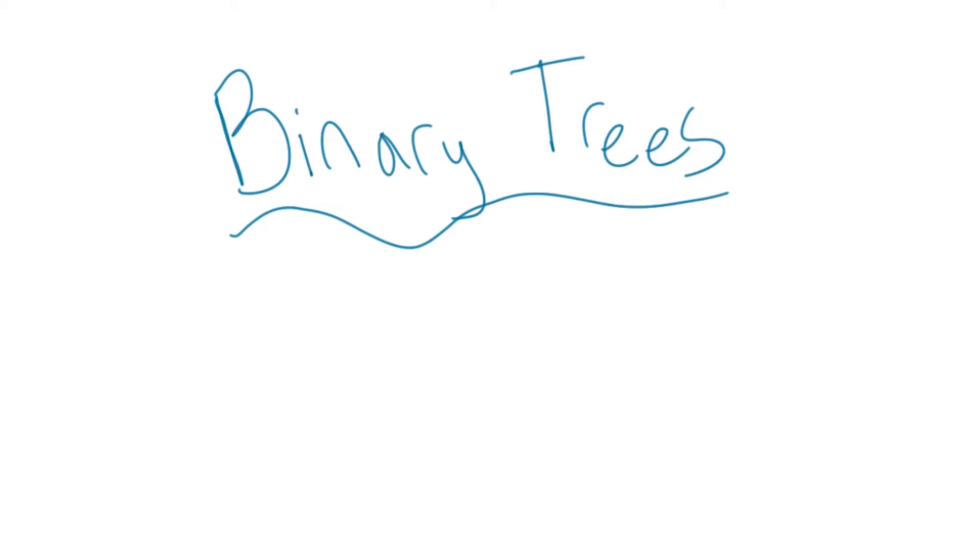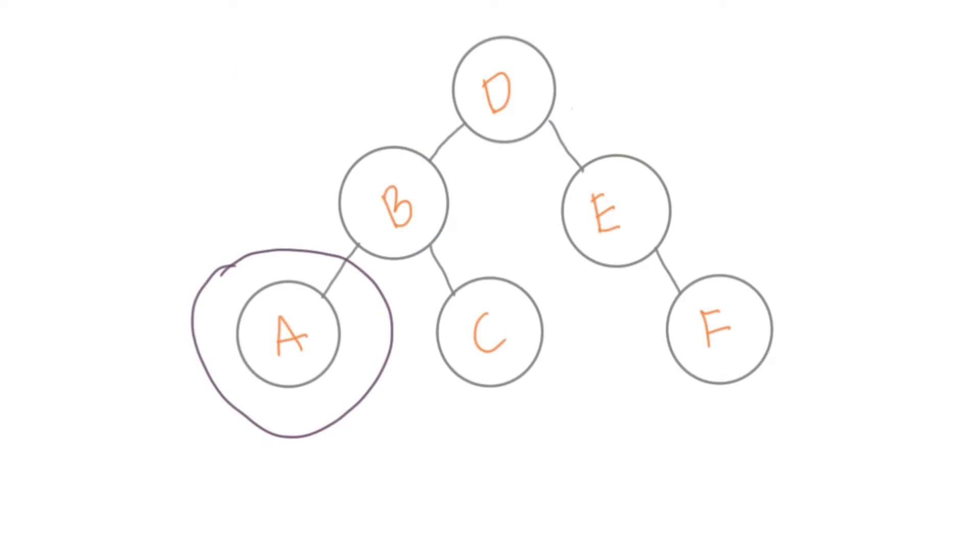Binary trees are simply trees where parents have, at most, two children. This means nodes can have 0, 1, or 2 children. Those children might even be null, but that's okay.